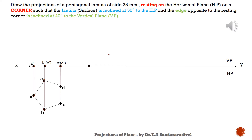Project A to the XY line to get A dash. Project B and E to the front view to get B dash and E dash. Project C and D to the front view to get C dash and D dash. Points A, B, C will be visible to the observer in the front view — those come without brackets. E dash and D dash come inside brackets, meaning they are not visible to the observer. The simple logic is: points nearer to the XY line will not be visible to the observer.